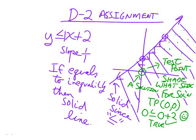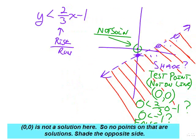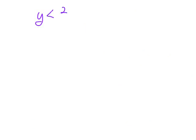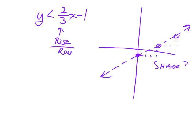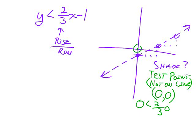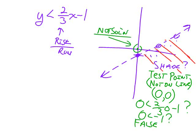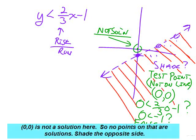If there's an equals part to the inequality, make a solid line because the line itself is part of the solution. If it's a dashed line, the line is not part of the answer. For y less than or equal to two-thirds x minus 1: intercept is negative 1, slope is two-thirds — rise over run. Test point (0,0): not a solution, so shade everything else on the opposite side.